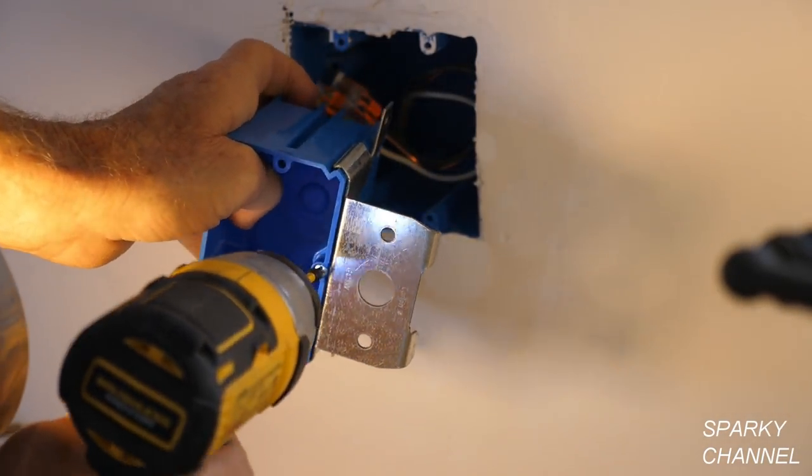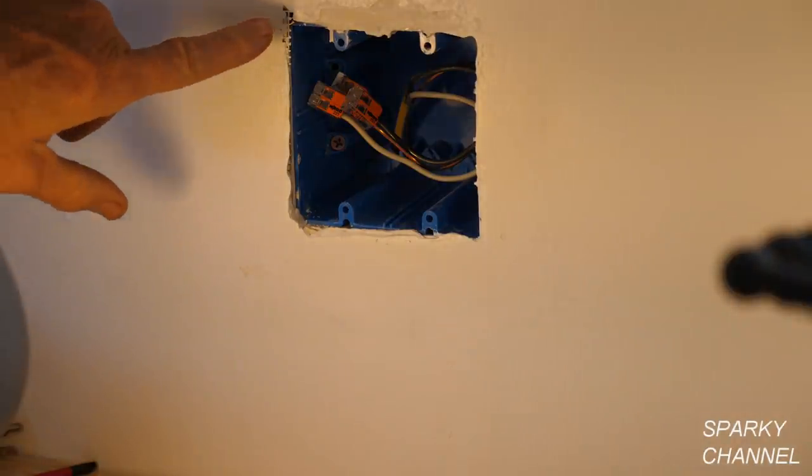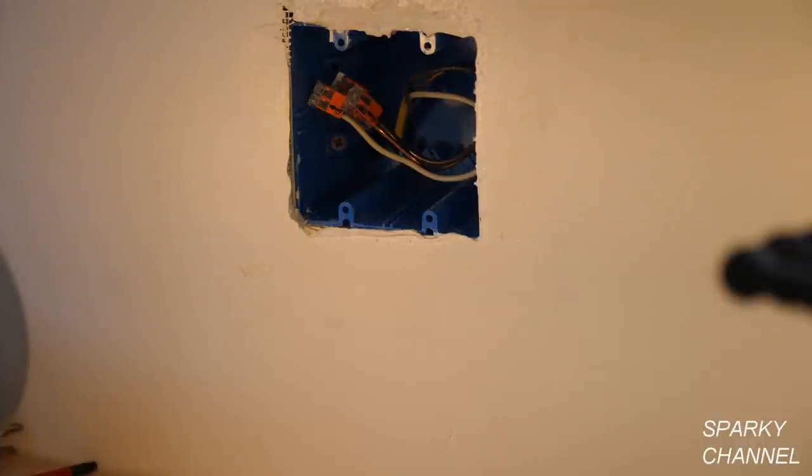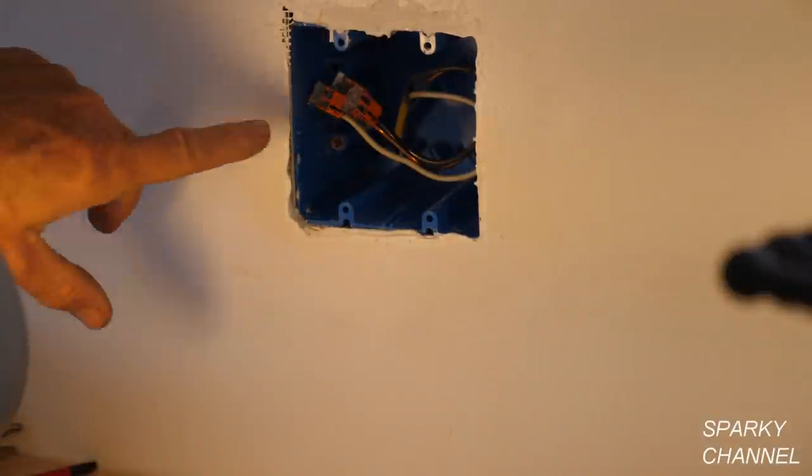This is a 1960 house and the walls are plaster and they're about an inch thick, but it might vary an eighth of an inch or so here and there, so this adjustable feature is really handy and I recommend them.